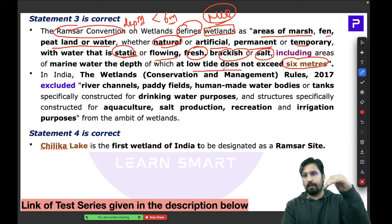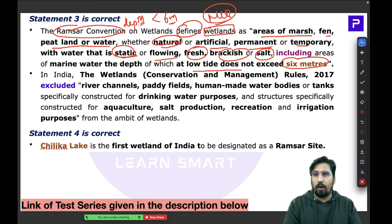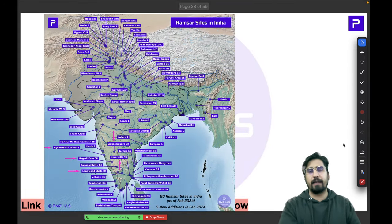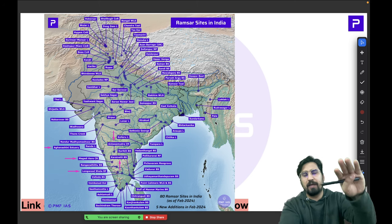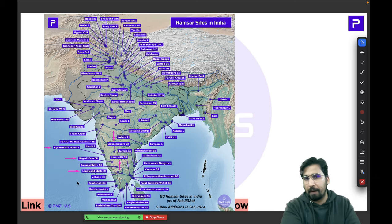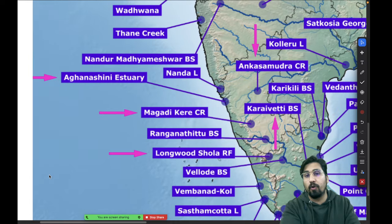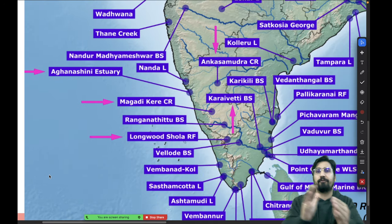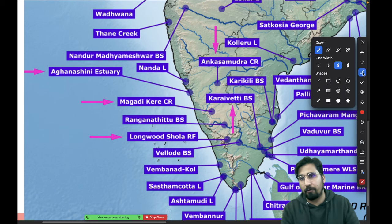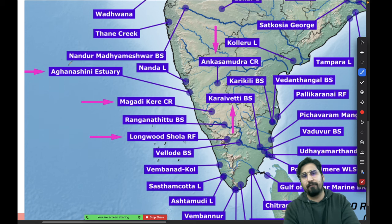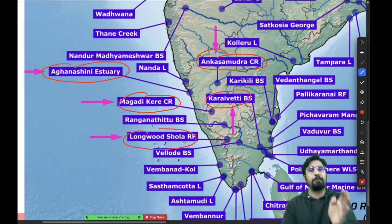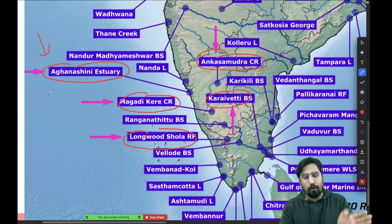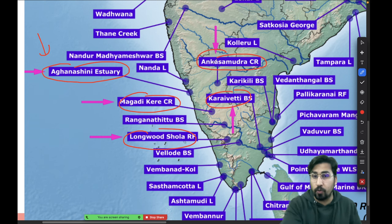India has 80 Ramsar sites on the map. Pay special attention to the latest five Ramsar sites added — there is a 90% chance exam questions will come from recent additions. Questions typically come in the form of matching Ramsar sites with their states. Be aware of which state each site belongs to.